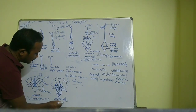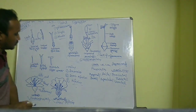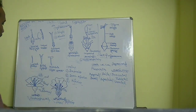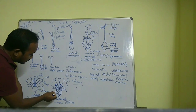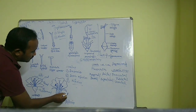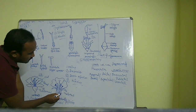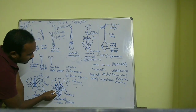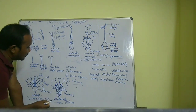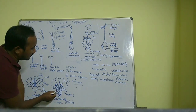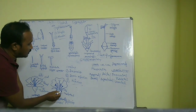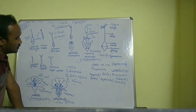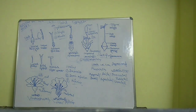The semi-inferior ovary is also known as semi-superior or half-inferior ovary. In this type, the thalamus forms a cup or ring around the ovary, and from this ring the other three whorls — calyx, corolla, and androecium — arise along the ring. This type is known as semi-inferior ovary.